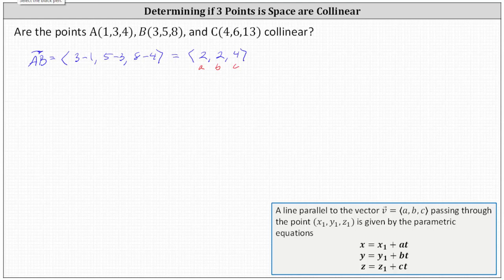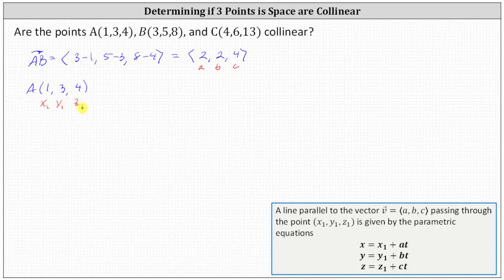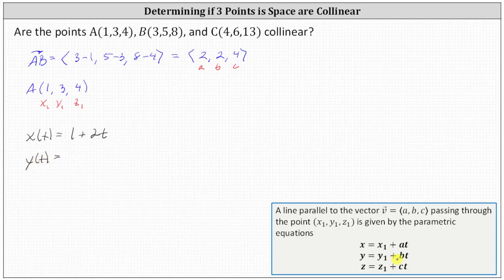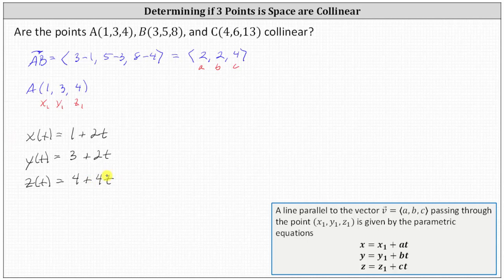Now we need a point on the line, which can be either point A or point B. Let's use point A, which is the ordered triple (1, 3, 4), giving us x₁ = 1, y₁ = 3, and z₁ = 4. We now have the information to write the parametric equations for the line passing through points A and B: x(t) = 1 + 2t, y(t) = 3 + 2t, and z(t) = 4 + 4t. Notice when t = 0 we have point A (1, 3, 4), and when t = 1 we have point B (3, 5, 8).